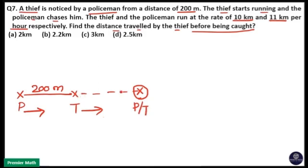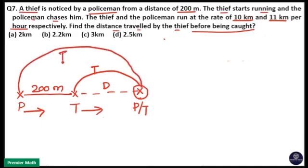This police will catch this thief. That means this thief will travel a distance D. So, police will travel distance D plus 200. Here you can see time taken by the thief to reach this point X is same as time taken by the police to reach this point X. That's why police catch this thief at a point X.